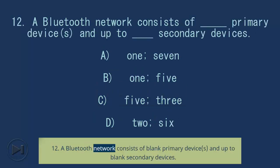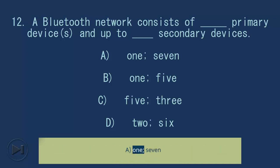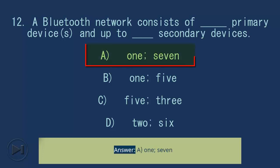Question 12: A Bluetooth network consists of blank primary device(s) and up to blank secondary devices. A. One, Seven; B. One, Five; C. Five, Three; D. Two, Six. Answer: A. One, Seven.